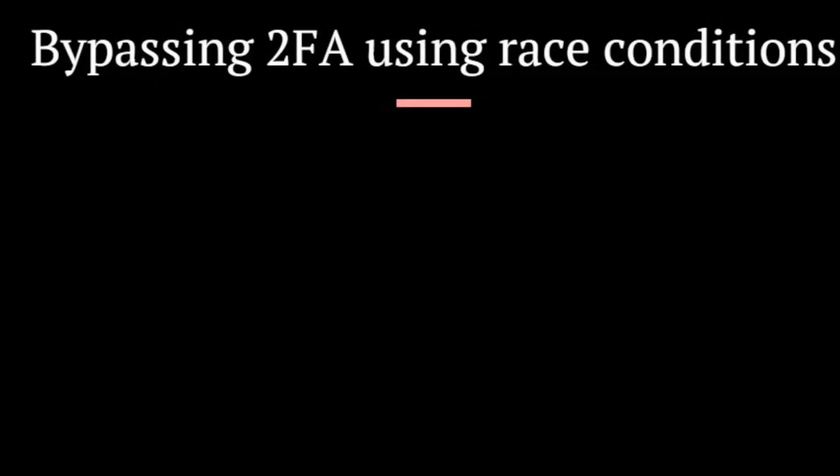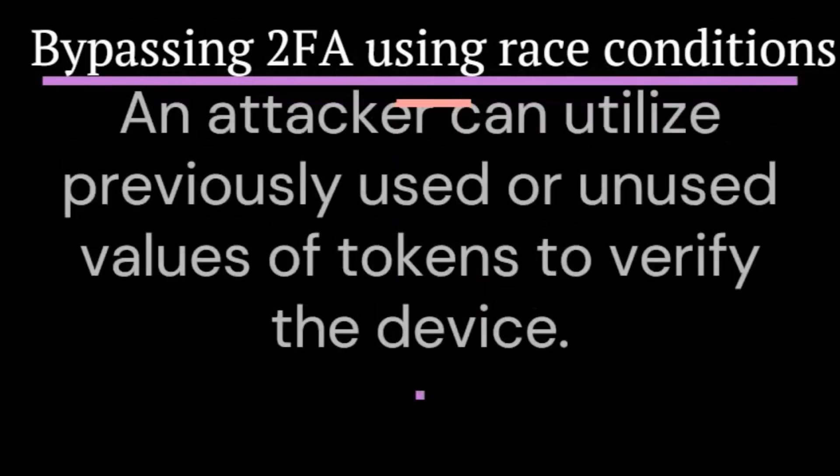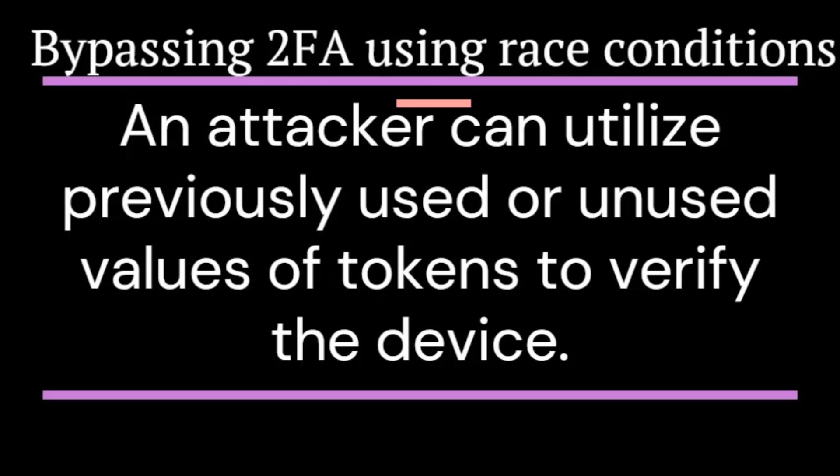Bypassing 2FA using race conditions. An attacker can utilize previously used or unused values of tokens to verify the device. However, this technique requires the attacker to have access to previously generated values, which can be done by reversing the algorithm of the code generation app.